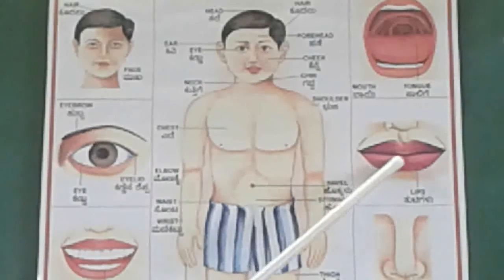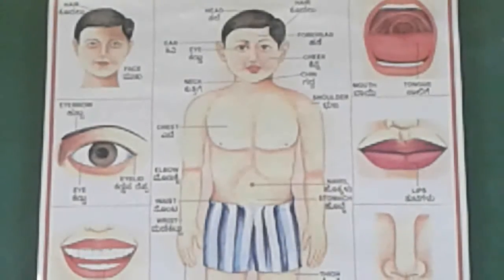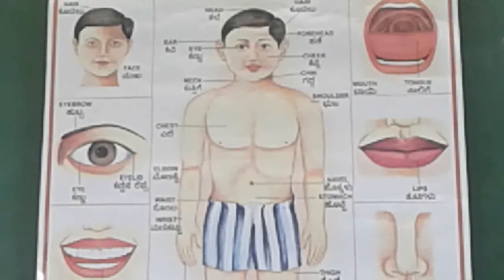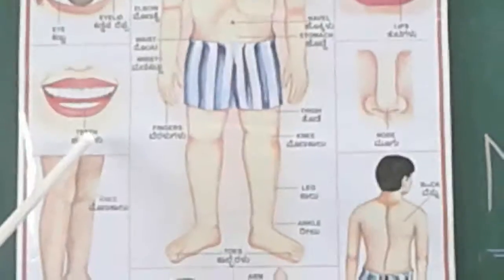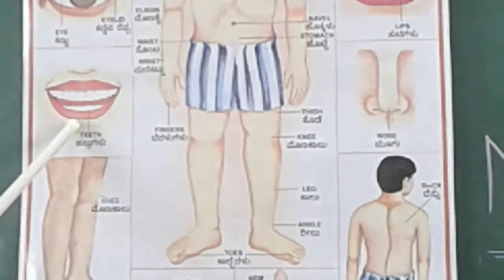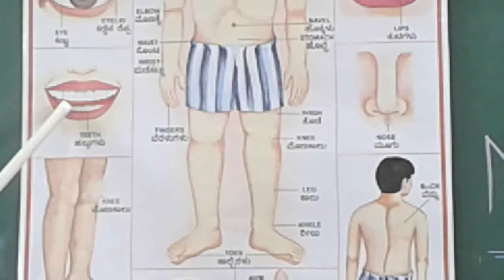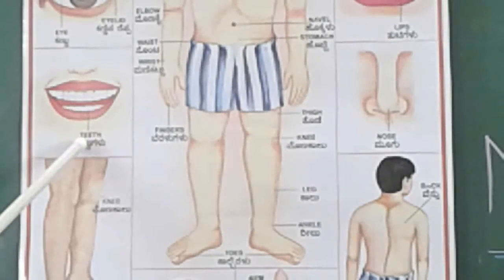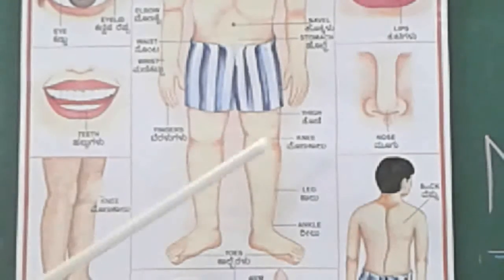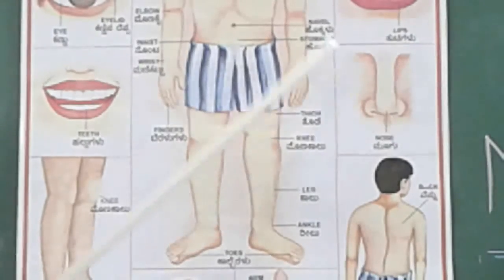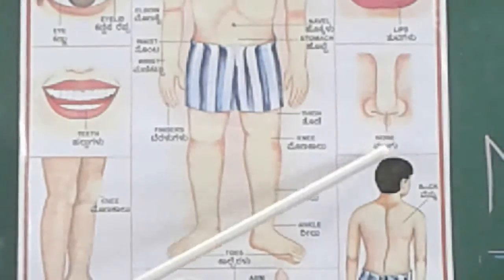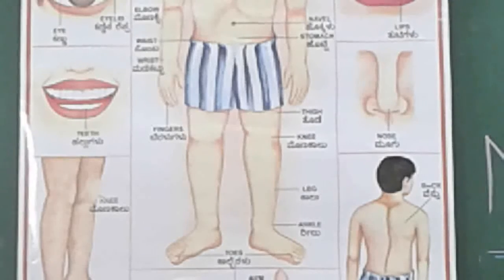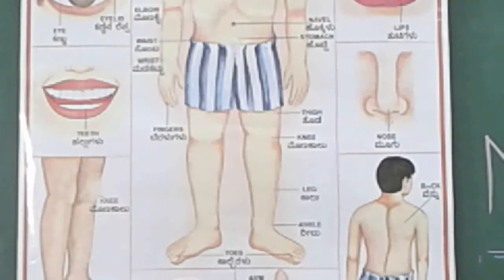This is the lips. Lips are an important part of our body. Lips also help us to talk. Inside our lips we can see this white part called teeth. Next is the nose. Nose is the central part of our face. With the help of the nose we can breathe and smell.